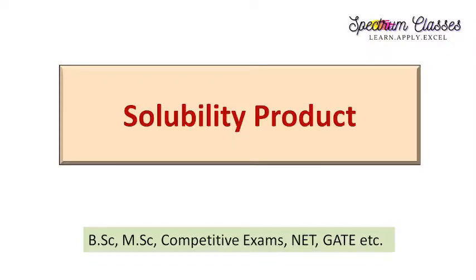Hello everyone, welcome back to Spectrum Glasses. In this video we are going to discuss the topic solubility product. This solubility product is a very important topic because by knowing it, one can understand the categorization of groups for determination of basic radicals while doing experiments related to acid and base radicals. Determination of acid and base radicals is given in the syllabus of 12th class, BSC, and MSC. This solubility product is also important from the competitive point of view because objective questions from this topic have been asked in chemistry exams.